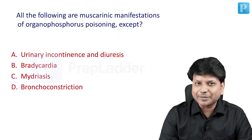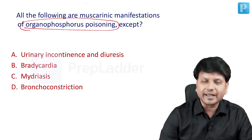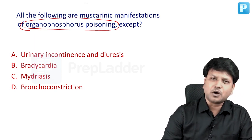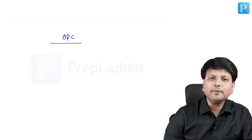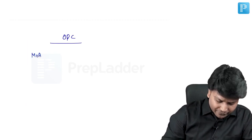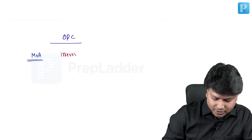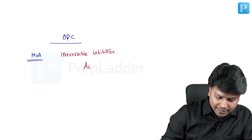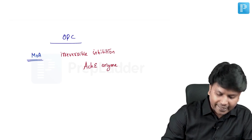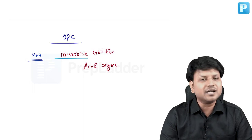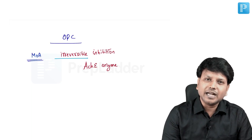Next question on OPC (organophosphorus compound) poisoning — a favorite area for examiners. The mechanism of action: OPC causes irreversible inhibition of acetylcholinesterase enzyme, leading to cholinergic toxidrome. Carbamate causes reversible inhibition, which is an important distinction. This irreversible inhibition results in cholinergic symptoms, including muscarinic and nicotinic stimulation.